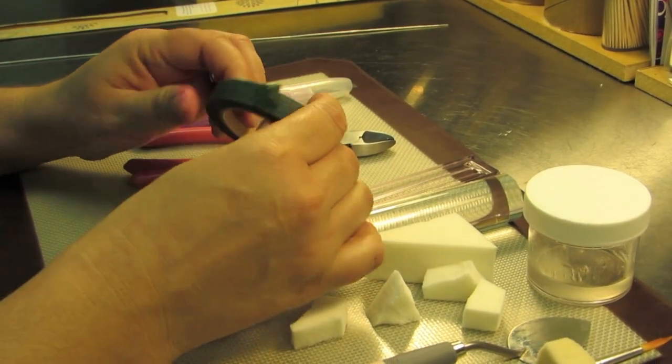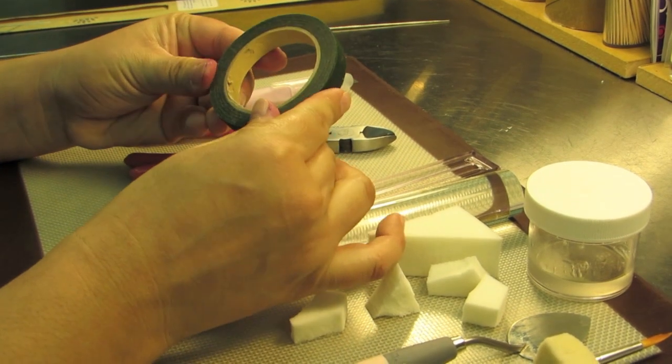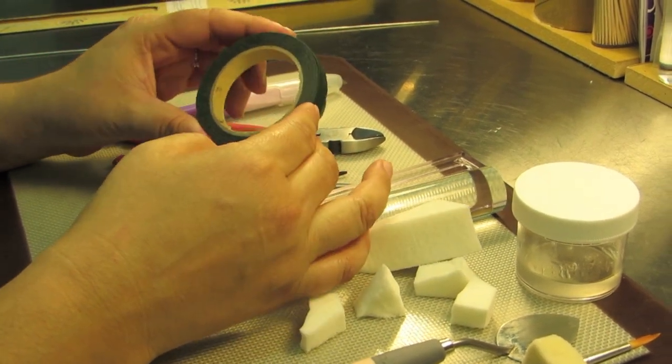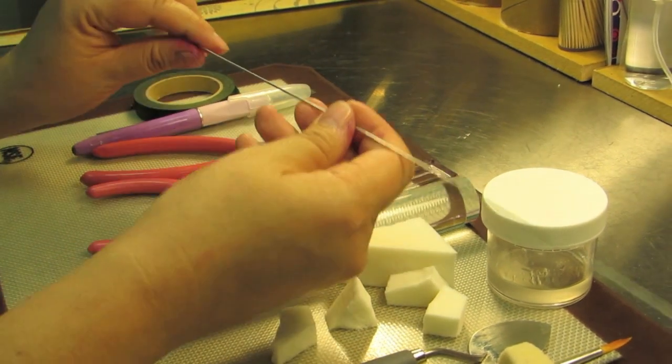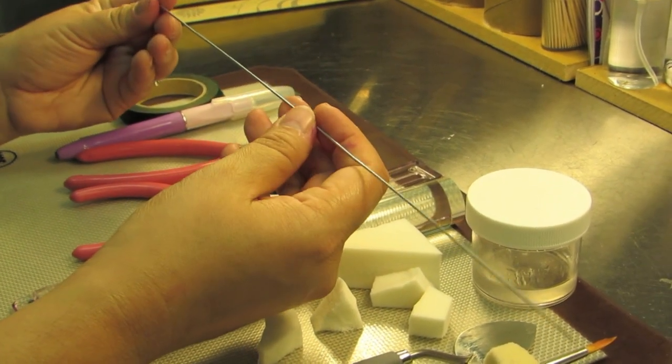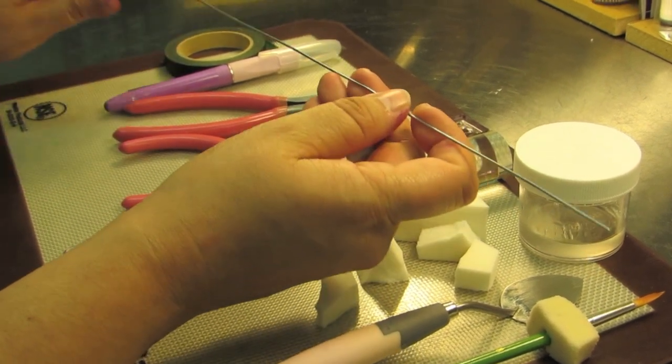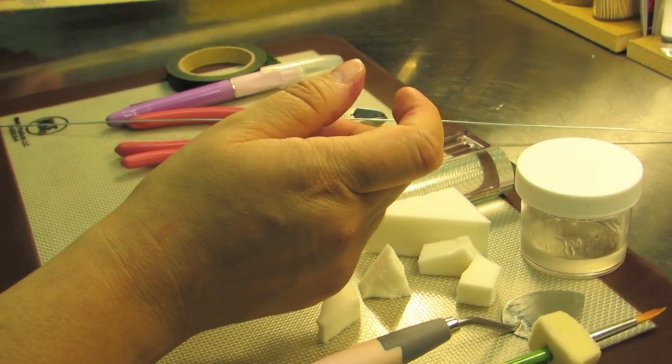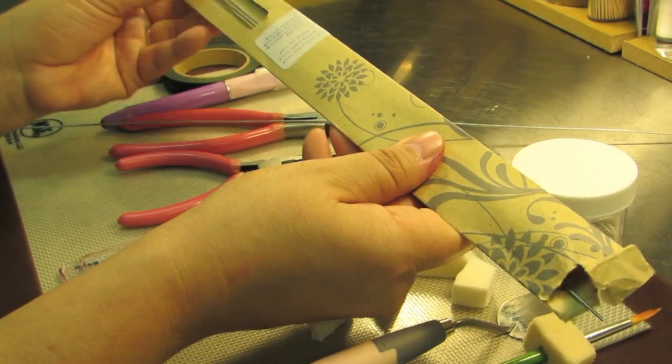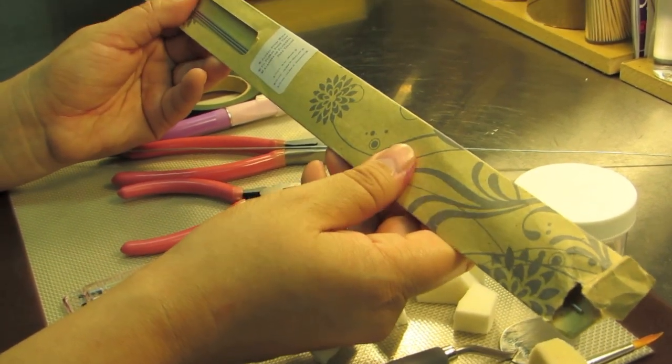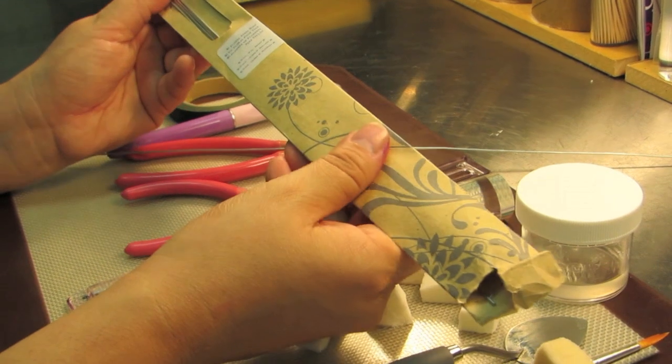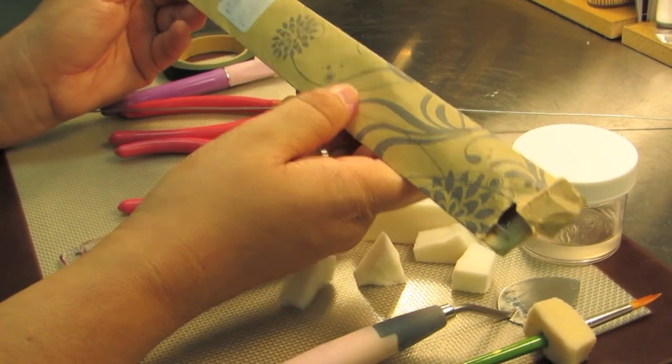You're going to need some floral tape. This is towards the end when we start assembling our bow together. And then you're going to need some wire. I use 18 gauge wire. This wire is 18 inches long and when I purchase it at craft stores like Michael's or Hobby Lobby, it comes in this large little brown envelope. Make sure you use 18 gauge or stronger.